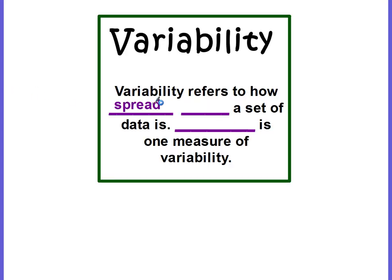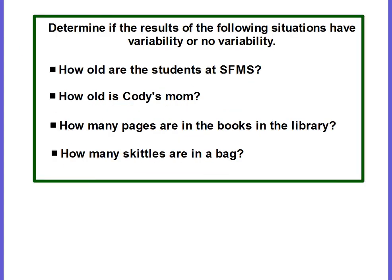Variability refers to how spread out a set of data is. Range is one measure of variability that we've used. Let's determine if the results of the following situations have variability or no variability.